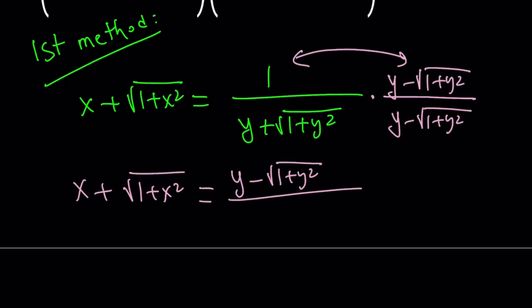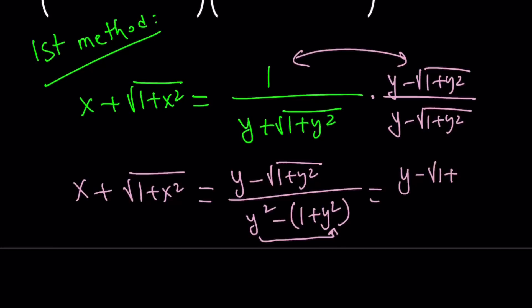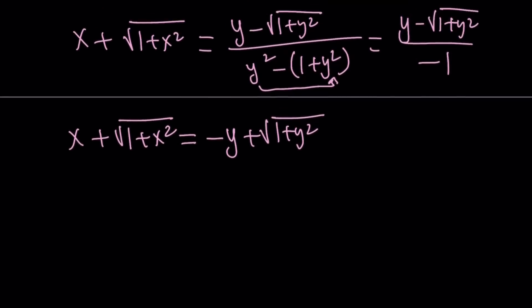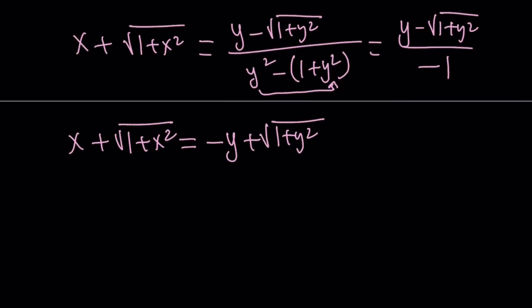The bottom is going to come from the difference of two squares: y squared minus the quantity 1 plus y squared. When you subtract those, you're going to get negative 1 because y squared cancels out. So this is equivalent to y minus the square root of 1 plus y squared, divided by negative 1. Dividing by negative 1 is the same as multiplying by negative 1, so it's just going to negate everything. We're going to get negative y plus the square root of 1 plus y squared. That is the first equation we're going to be using.